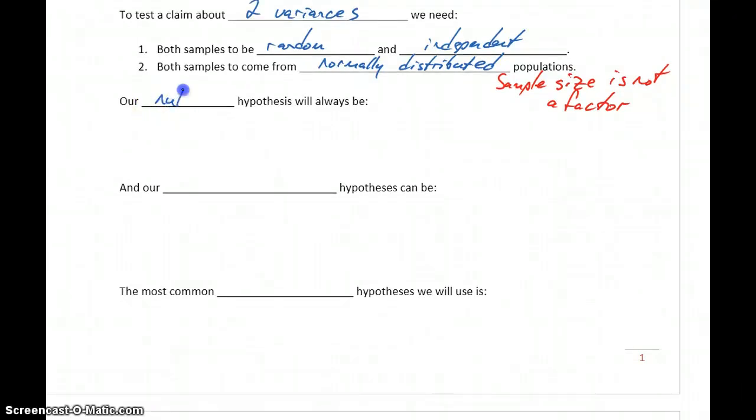Our null hypothesis for testing claims about variances will always be the same. Instead of testing the difference of two variances, we'll be testing the ratio of our two variances. The null hypothesis is always that those two parameters are equal, so any number divided by itself should be one.